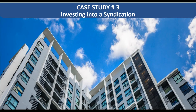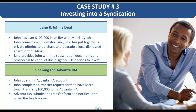The next investment I'm going to go over is investing into a syndication — this type of investment is where you're pooling your money with other investors to create a larger project that you potentially could not fund as a single individual investor. In this case we've got John who has over a hundred thousand dollars in an IRA with a larger custodian. He connects with investor Jane through his local chamber of commerce and Jane has put together a private offering to purchase and upgrade a local distressed apartment building. Jane shows John the subscription documents and the prospectus so that he can conduct his due diligence on the deal — learning about the property, the plans, and the expected returns.